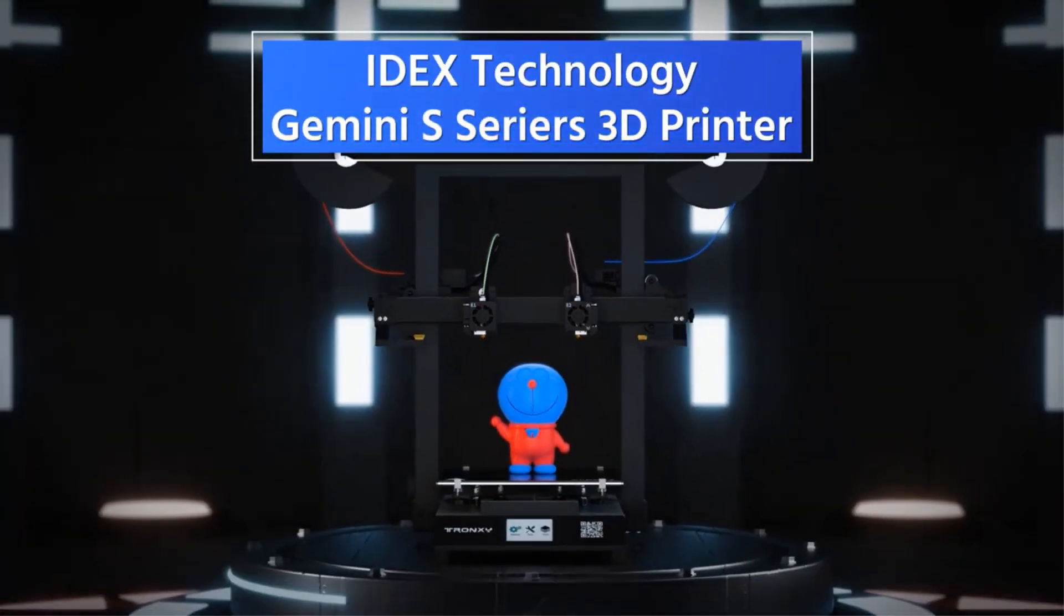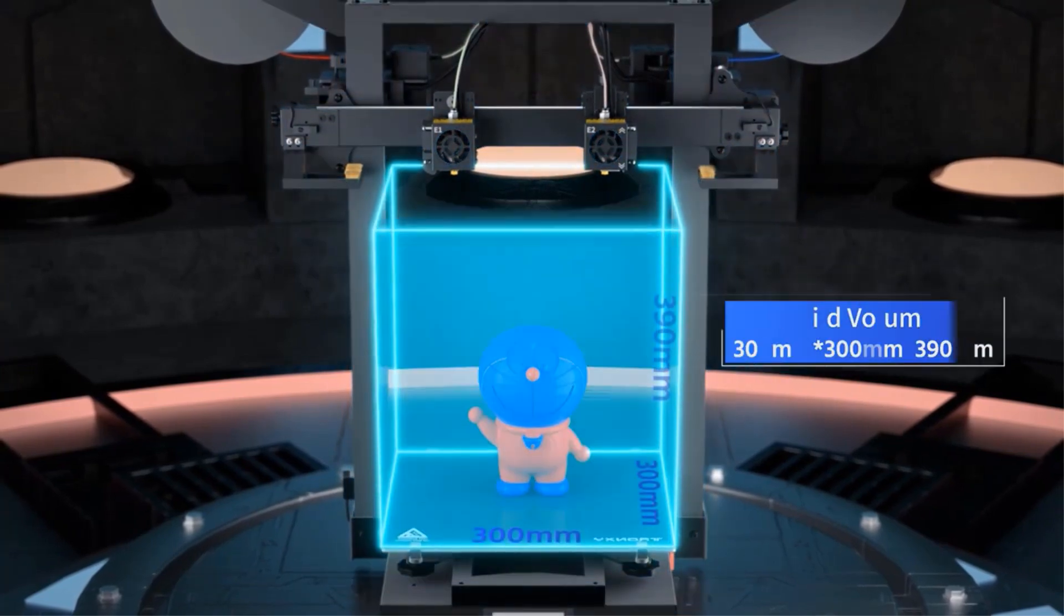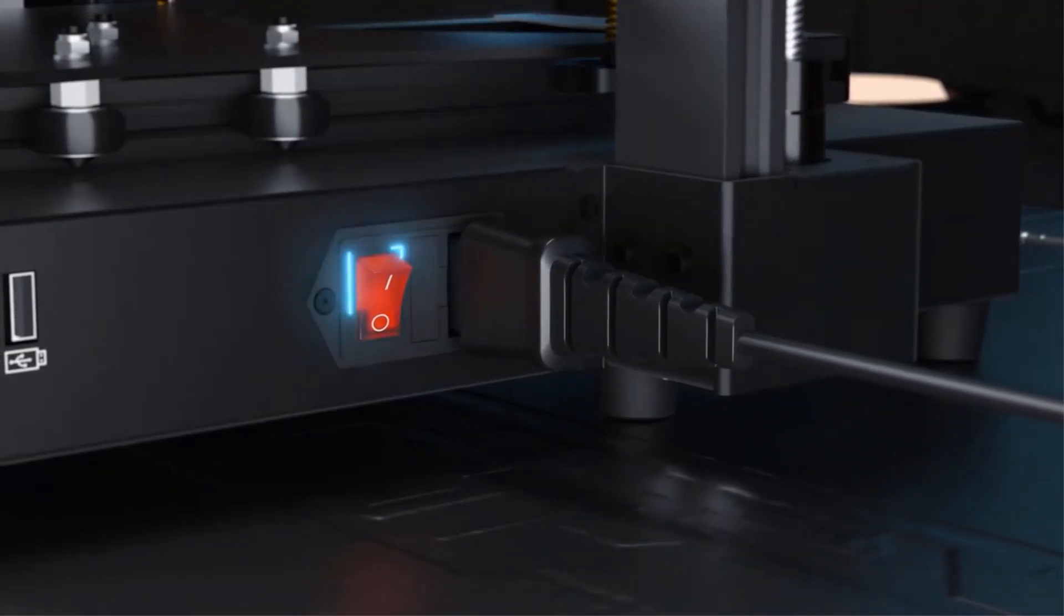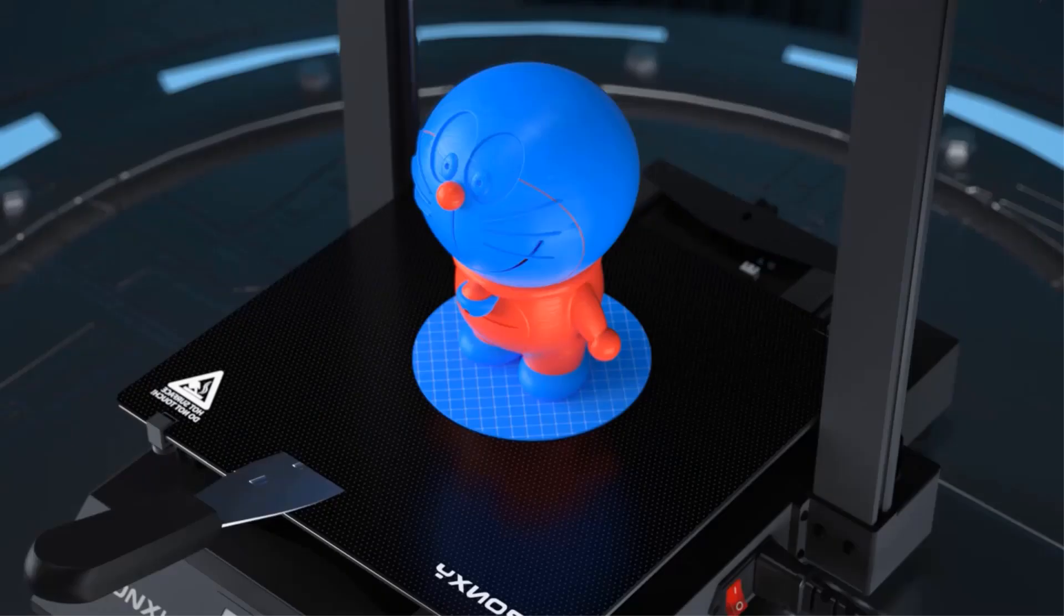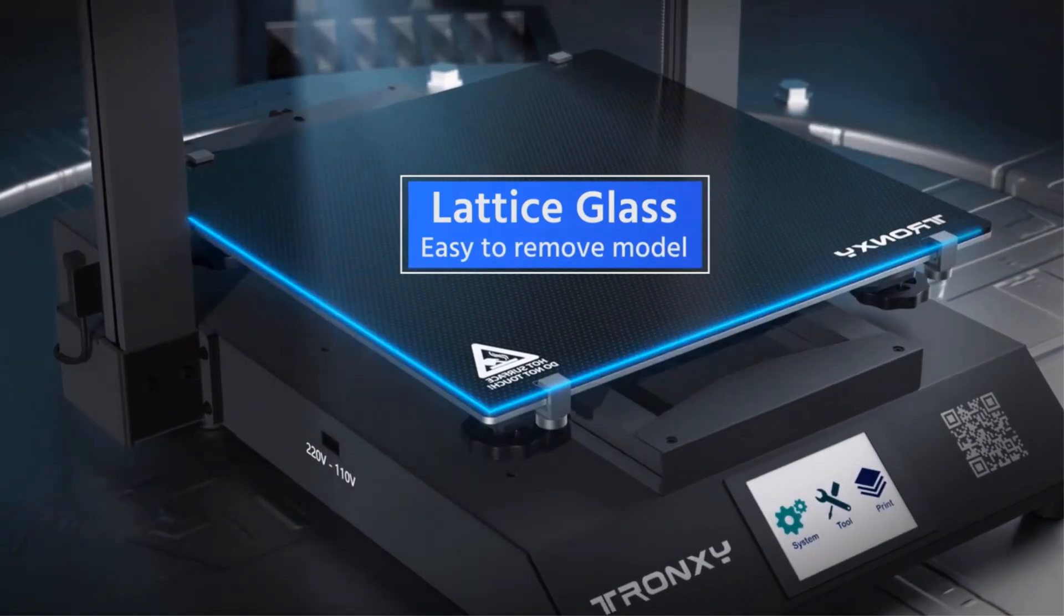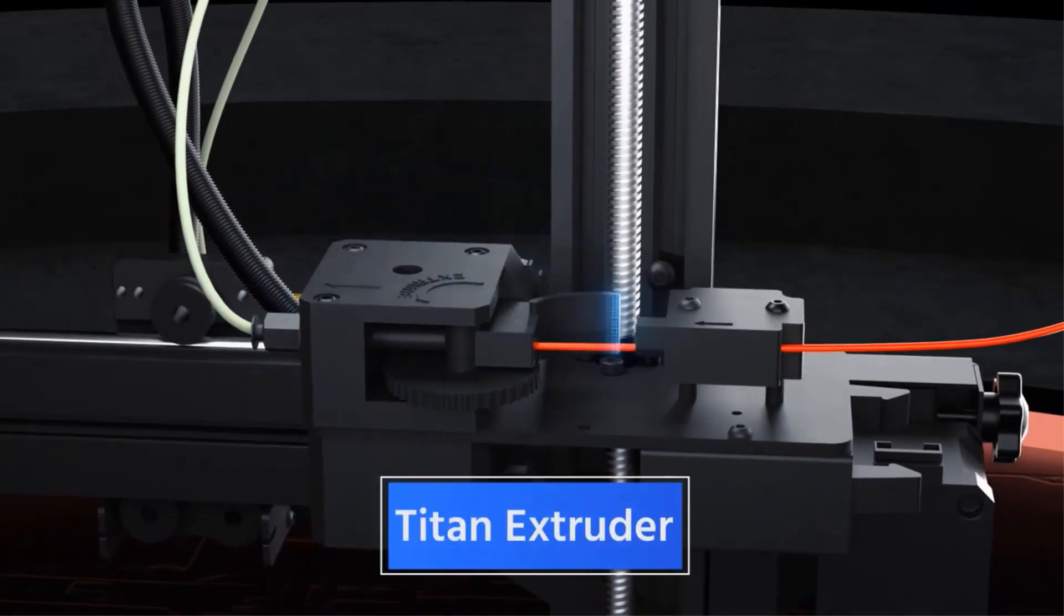With its generous build area, users have the flexibility to create larger and more intricate models. Featuring an independent dual extruder system, the Gemini S allows for simultaneous printing with two different colors or materials. This capability opens up a wide range of possibilities for multicolored or multicomponent prints.